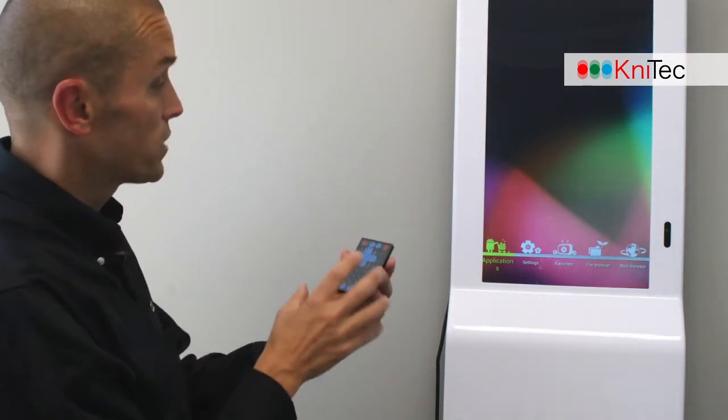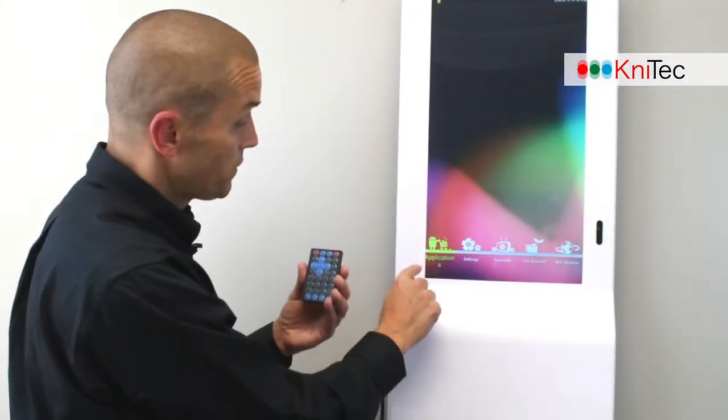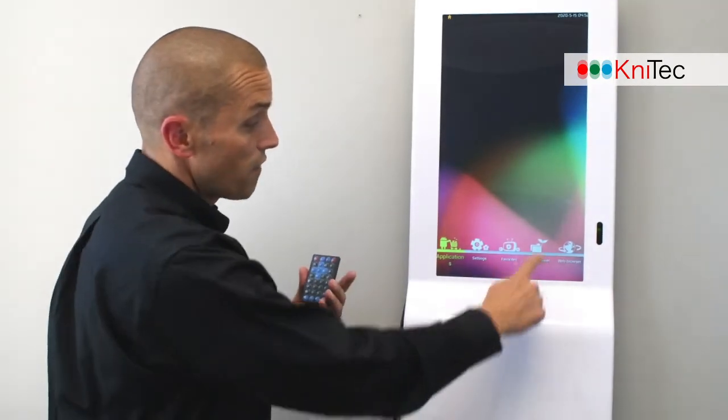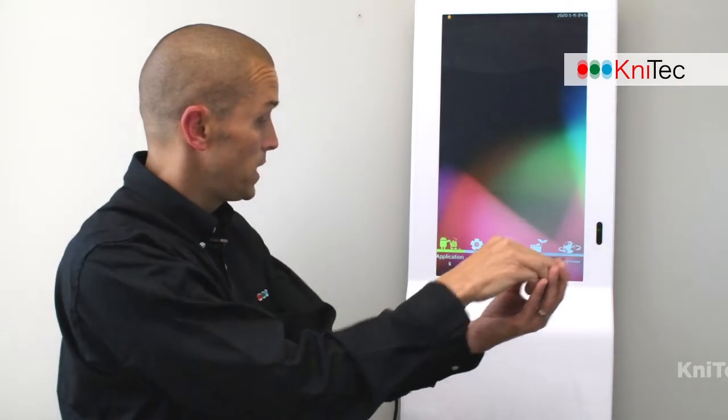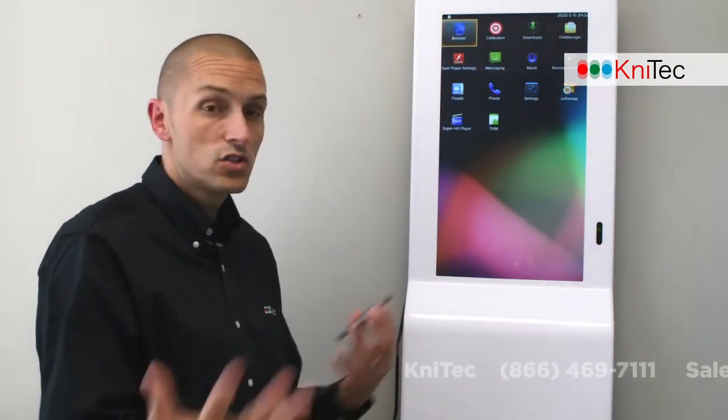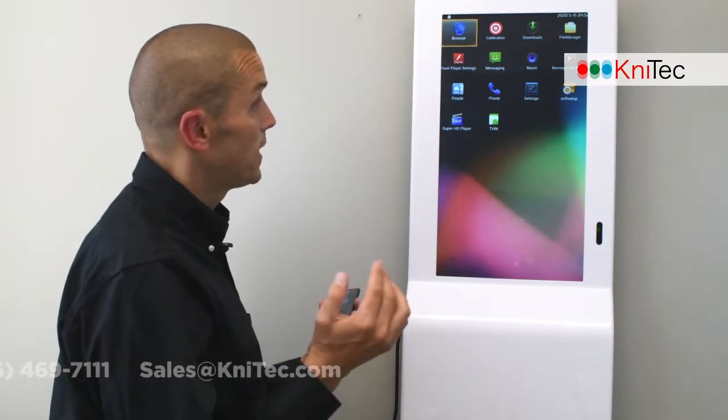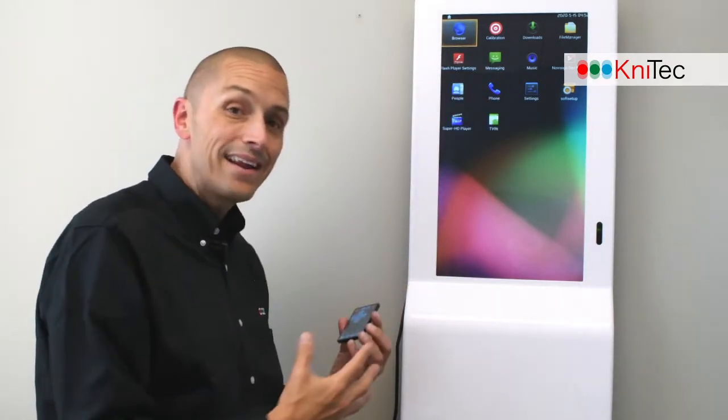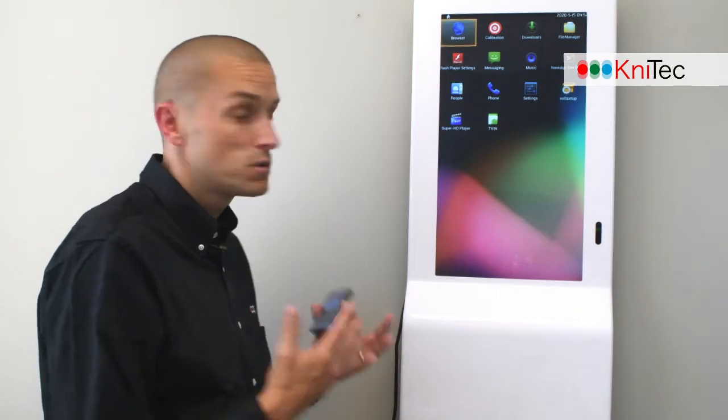This is the home screen. So you're going to see here, you've got a few different options. You've got applications, settings, favorites, file browser, and web browser. I'm going to take you in to applications. This is where the NovaSign software sits and resides. And you can see a lot of other applications on here. This is where you can add or remove applications depending on what you're doing and what kind of applications that you'd like to use with this unit.